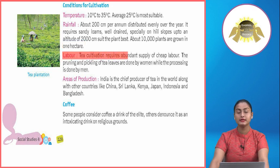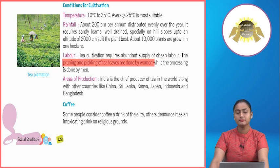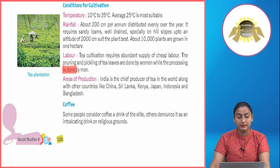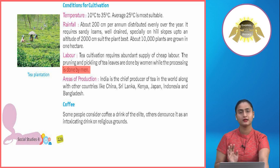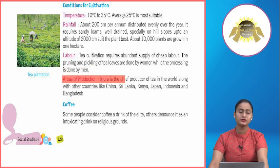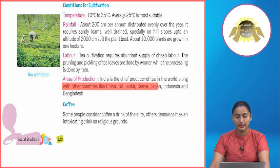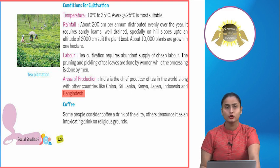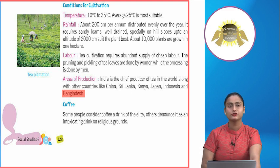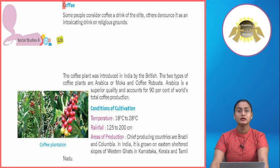Tea cultivation requires an abundant supply of cheap labor. The pruning and picking of tea leaves are done by women, while the processing is done by men. Areas of production: India is the chief producer of tea in the world along with other countries like China, Sri Lanka, Kenya, Japan, Indonesia and Bangladesh. India is the leading producer of tea in the whole world.